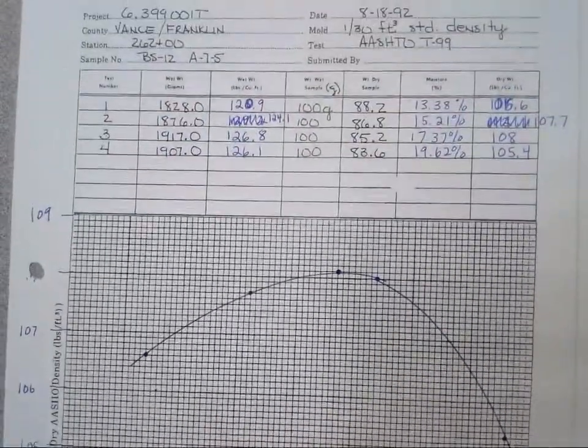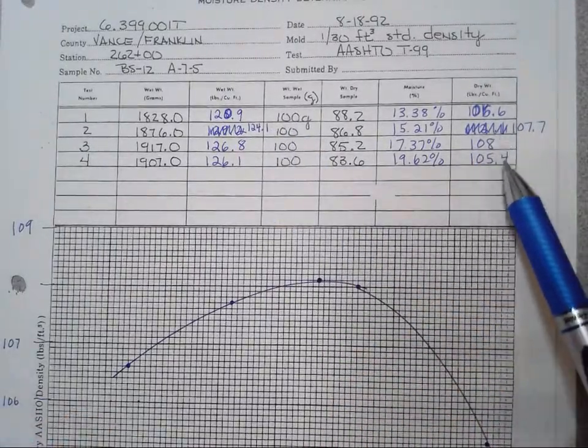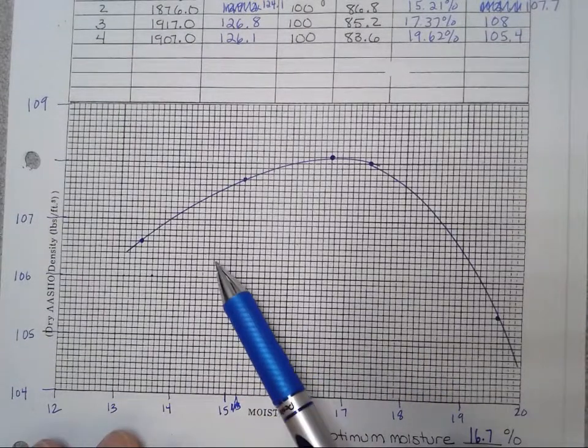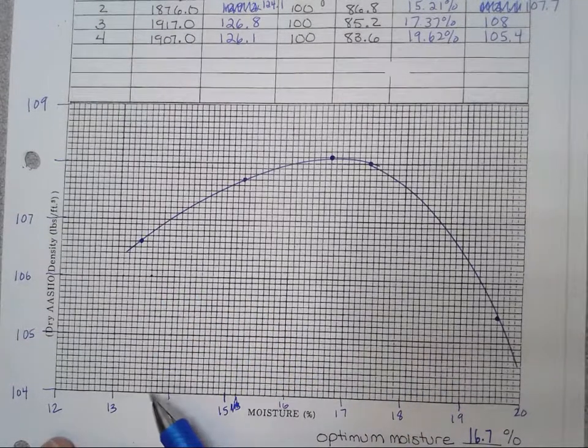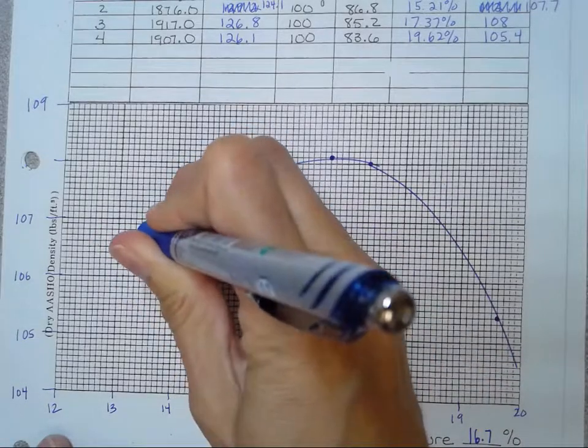Okay, for BS5, again, put our data in, yeah, a little messy here, but once we graph it down here, we've got our first data point, 13.38 and 106.6. So it should be right around here,